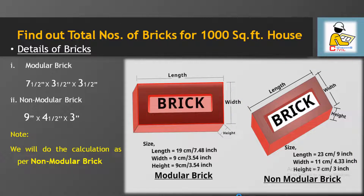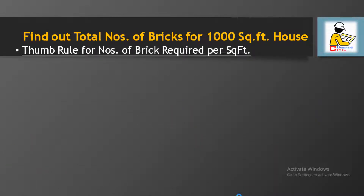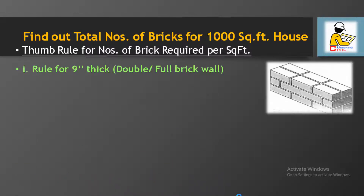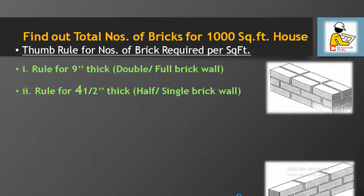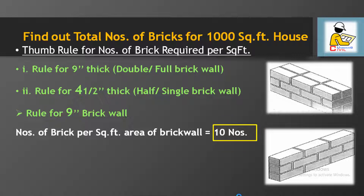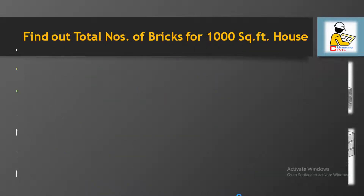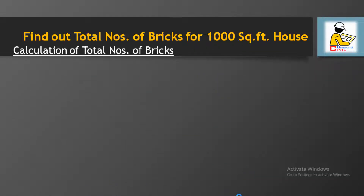Now let's discuss the thumb rule required per square feet of brick wall. For a 9 inch brick wall, we usually take 10 numbers of non-modular bricks per square feet of brick wall. Similarly, for a 4.5 inch brick wall, we usually take 5 numbers of non-modular bricks per square feet. Now let's jump into the main calculation of total number of bricks.